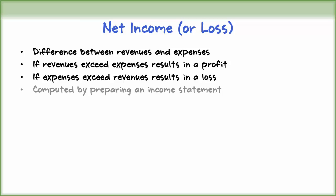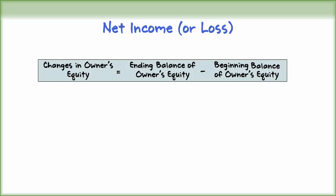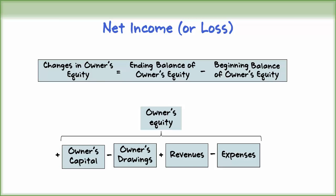The net income is usually computed by preparing an income statement. It can also be calculated from an analysis of the change in owner's equity during the year. The change in owner's equity is the difference between the beginning balance and the ending balance of owner's equity. Owner's equity increases by an owner's investments and by revenues from business operations. It decreases by an owner's withdrawals of assets and by expenses.